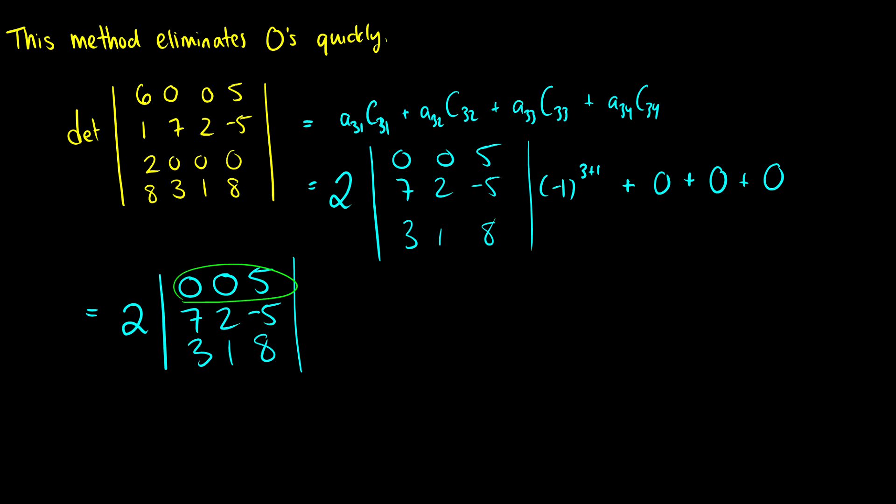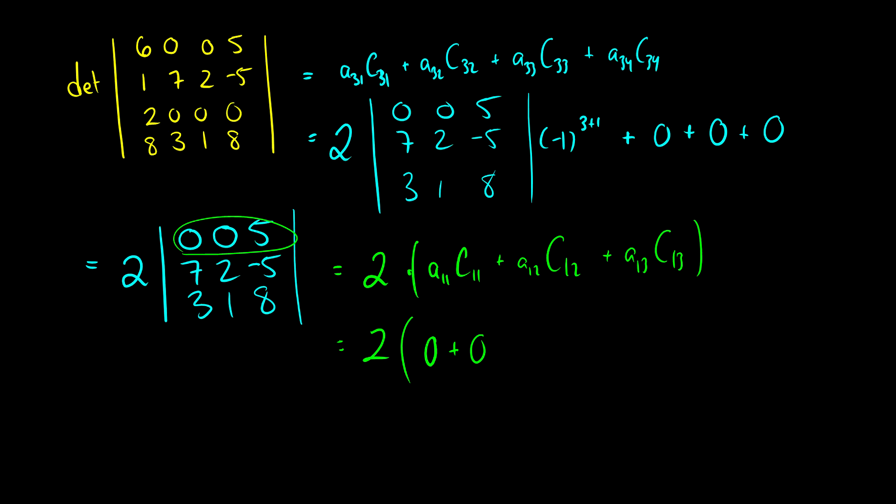But it gets even better because now we have another row we can do this with: 0, 0, 5. So this is going to be 2 times A11C11 plus A12C12 plus A13C13. But at this point, A11 is 0, A12 is 0. So all we have to do is A13C13, that's going to be 5 times negative 1 to the i plus j, so 1 plus 3. Then the determinant taking out the first row and the third column, so we're left with 7, 2, 3, 1.